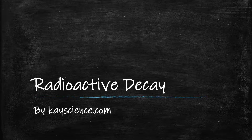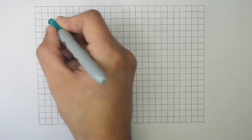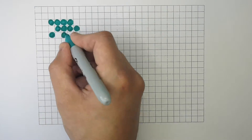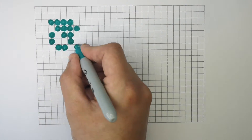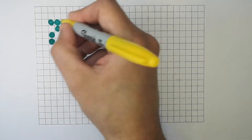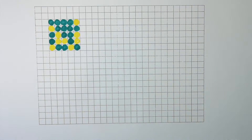Radioactive Decay by kscience.com. In this radioactive sample, there are 16 unstable nuclei and 9 stable nuclei. What we're going to see is how the number of unstable nuclei halves with every half-life.